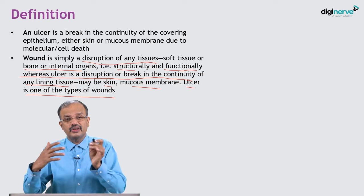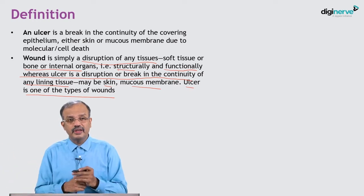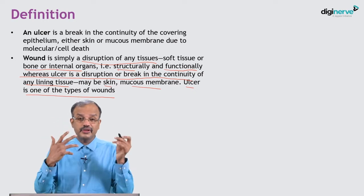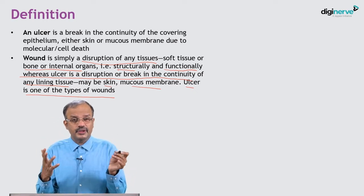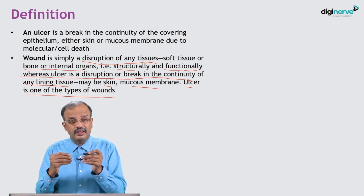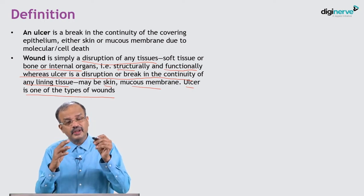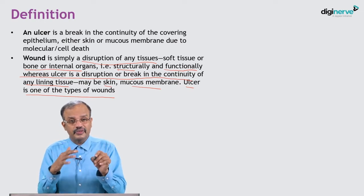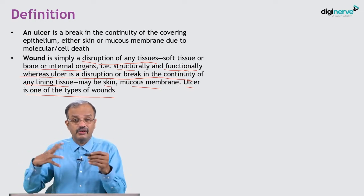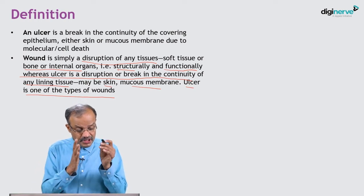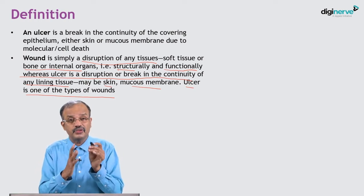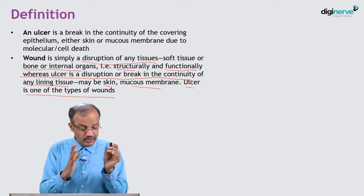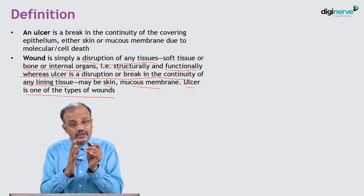If there is a liver injury, it is called a wound. If there is a skin injury, it is a wound. Bowel injury, thoracic injury, lung injury, brain injury - everywhere it is a wound. Ulcer is one of the types; it is only named when there is a break in the lining - skin, mucous membrane, and so on. Wound is not synonymous with ulcer; ulcer is a specific entity, wound is a wider entity.